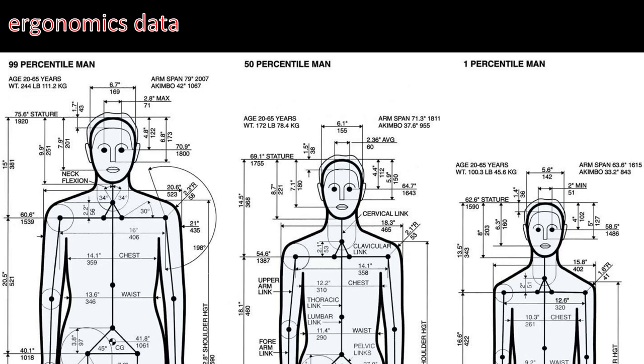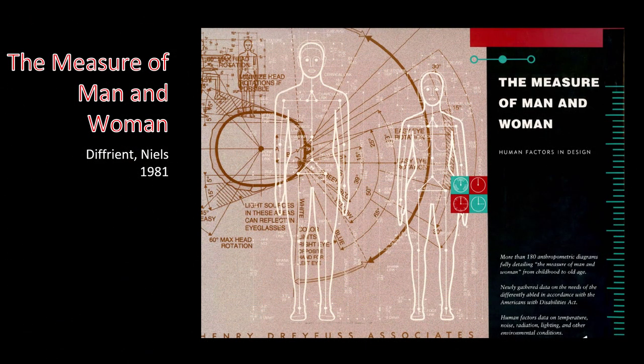So what does the 99th percentile man or woman look like? In this data, you can see they're looking at an age range between 20 and 65 years, looking at a weight range, and they have some data there on their arm span, which is dynamic data. And then you can see the static data around their head height or their eye spacing, the 50th percentile, same with the 50th percentile and the one percentile. So this book, The Measure of Man and Woman, is a study on more than 180 anthropometric diagrams. It was written in 1981 and it's used by designers to consider the ranges within what they're designing for.